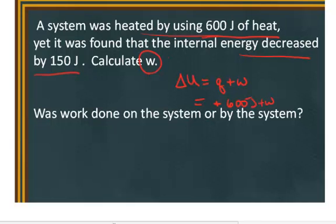Plus W is what we're calculating equals the change in internal energy. And this time it says the internal energy decreased. So that means that if it decreased, the change is going to be a negative 150 joules.